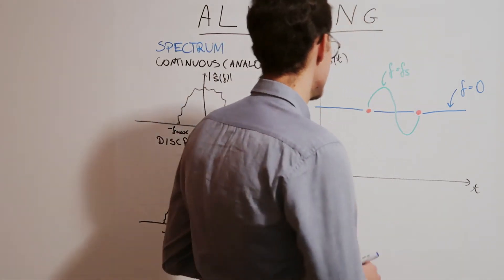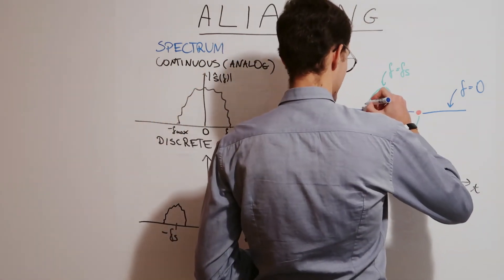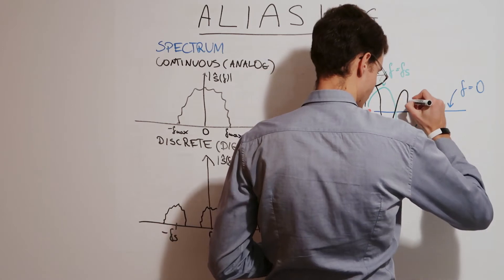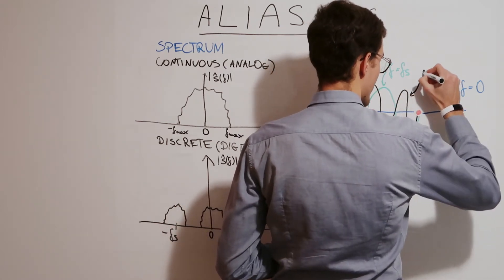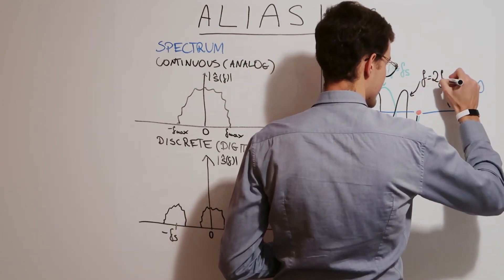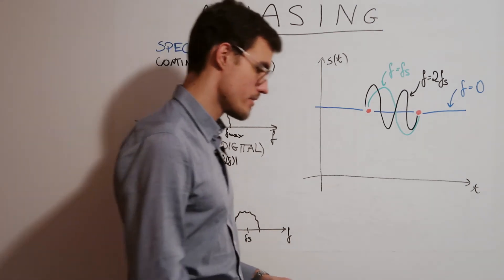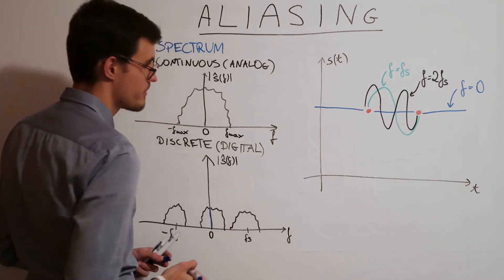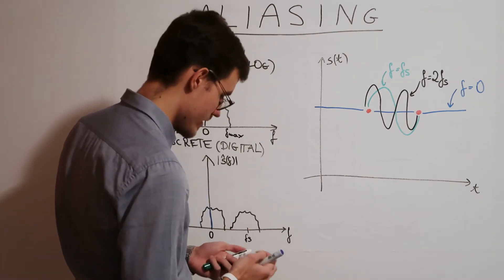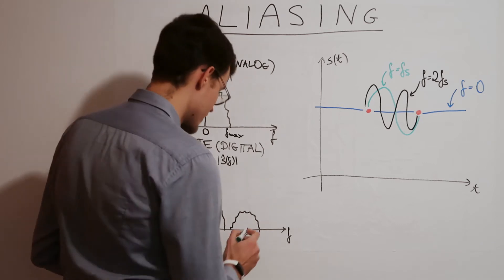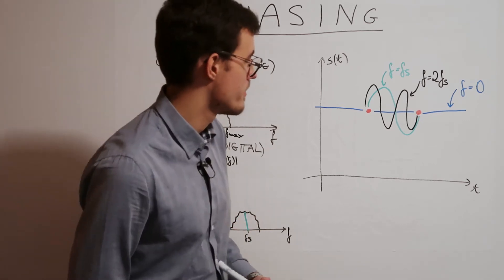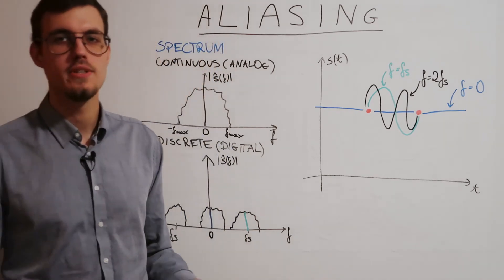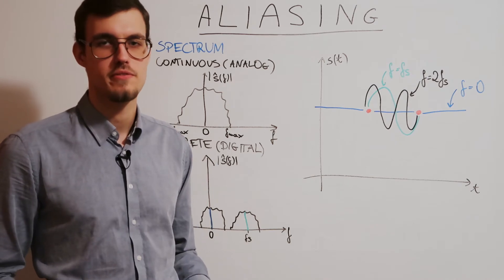And the same goes for 2fs. So the blue signal corresponds to this frequency. The green signal may correspond to this frequency. And so on and so forth. So that's the way we can intuitively view the multiplicity of discrete Fourier spectra.